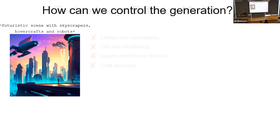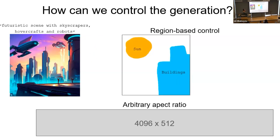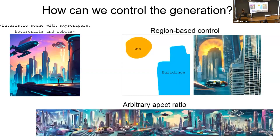The question that will guide us during my talk is: how can we control the generation in a more flexible way? For example, I want to generate an image in an arbitrary aspect ratio, like this panorama, or control where buildings or the sun are going to be located in the generated image. That is why we proposed a method called MultiDiffusion — this is the result of our method, and it enables such general and flexible control.